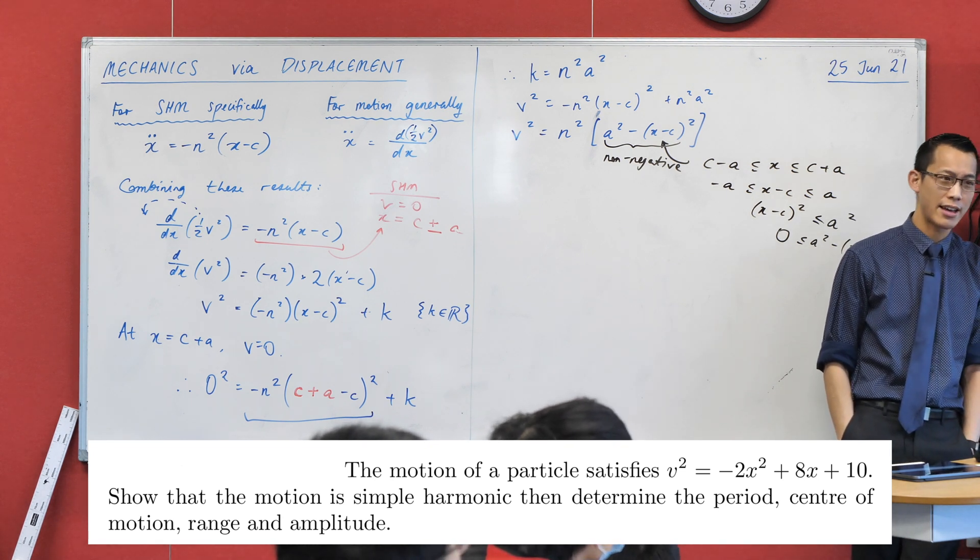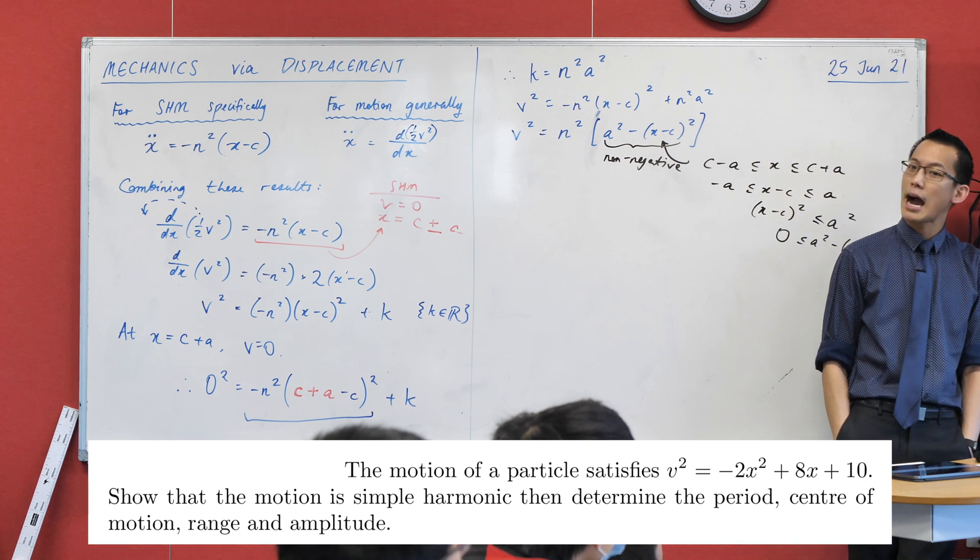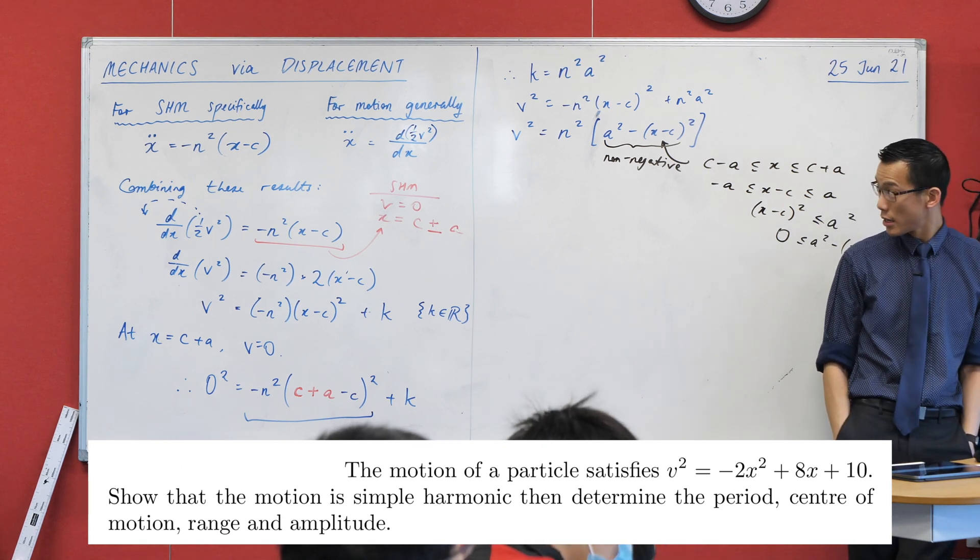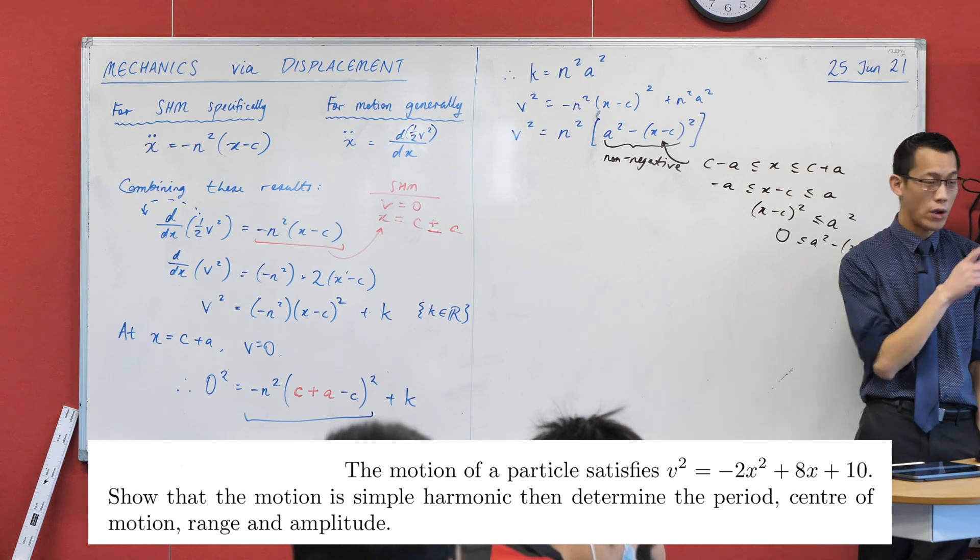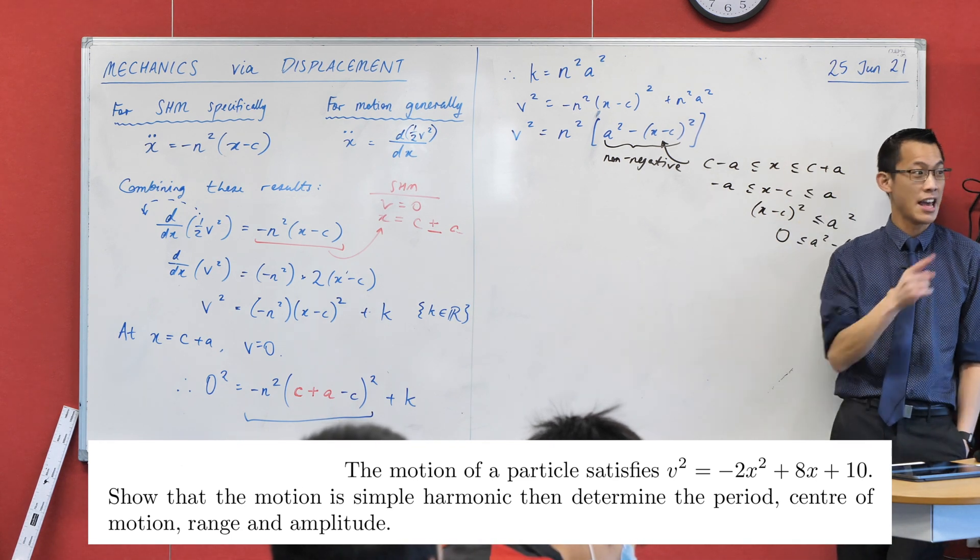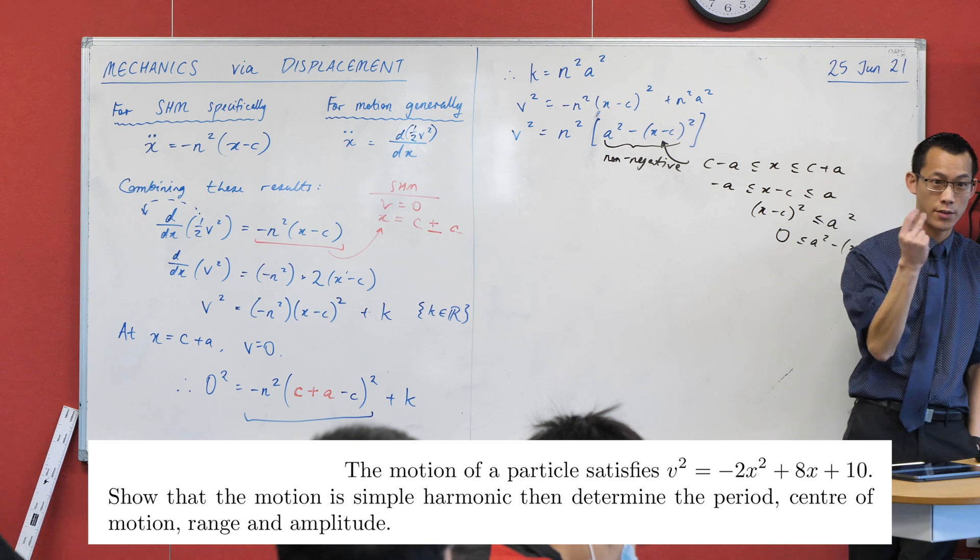Even though it doesn't look anything like a trigonometric function, or like our original differential equation that we started with, minus n squared x minus c. When you see this, what we've just shown is that that's simple harmonic motion. That's a bit of an indicator for us.